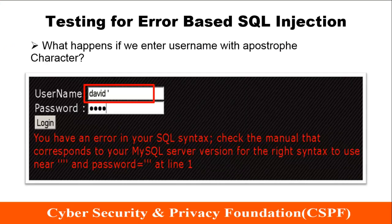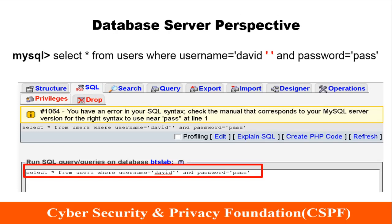Now testing for error-based SQL injection: if we enter the username with an apostrophe character, the username David followed by an apostrophe invokes an error message from the SQL database. The error says there is an error in the SQL syntax, asking us to check the manual for the MySQL server version for the right syntax near the quotation mark and the password at line one. At the backend, the SQL statement becomes SELECT * FROM users WHERE username equals David' and password equals pass — the extra quotation mark invokes a SQL syntax error.